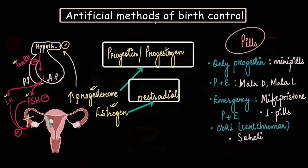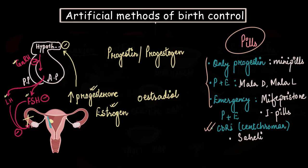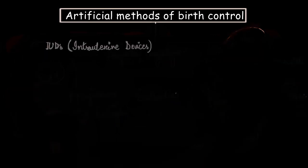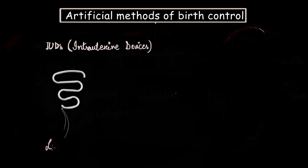So this was all about pills, where we discussed about hormonal and non-hormonal pills. Now let's move on to another contraceptive method, an artificial method, which is known as intrauterine devices. And by the name, you can already guess that these are devices that are put inside the uterus. Therefore, it is called intrauterine. And just like pills, these are also of different types. And the first one that we are going to talk about is Lippes loop.